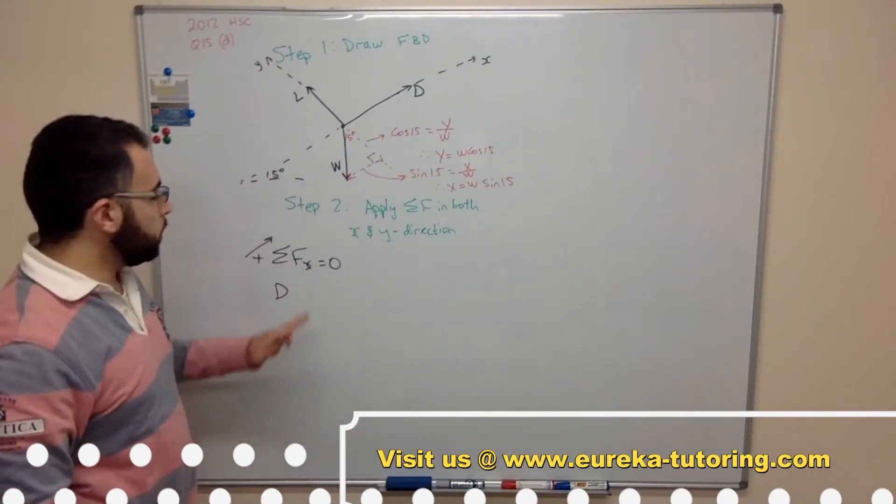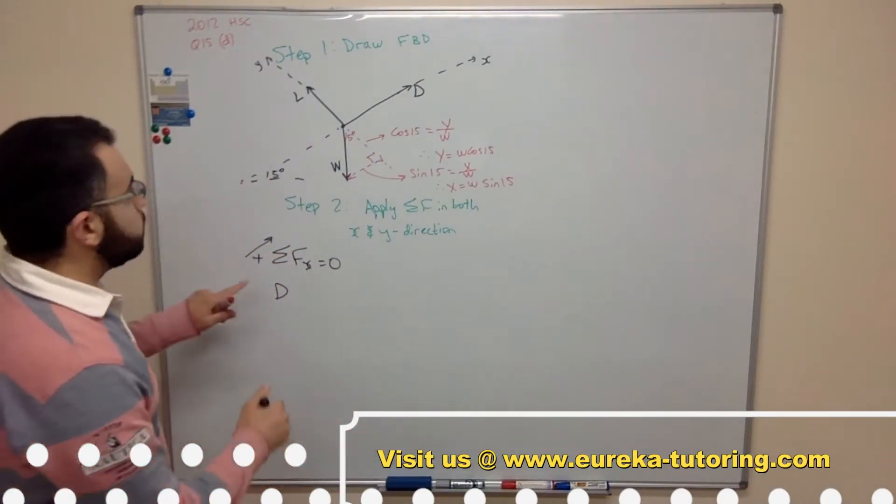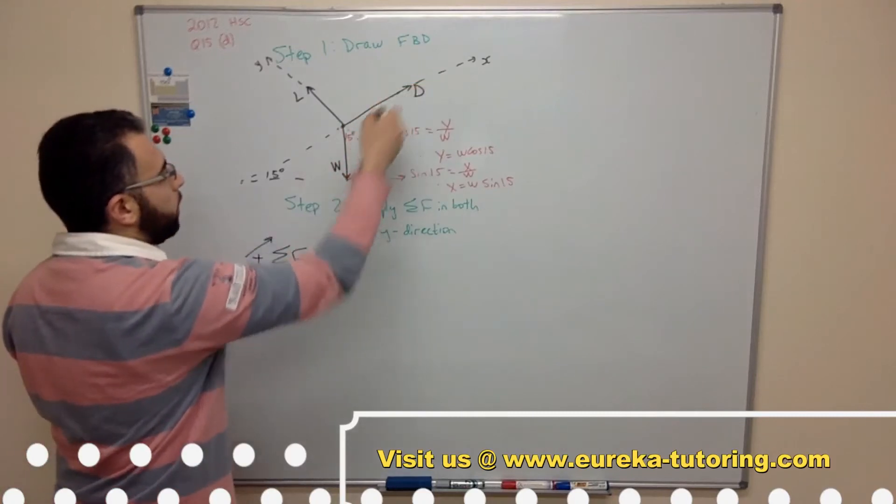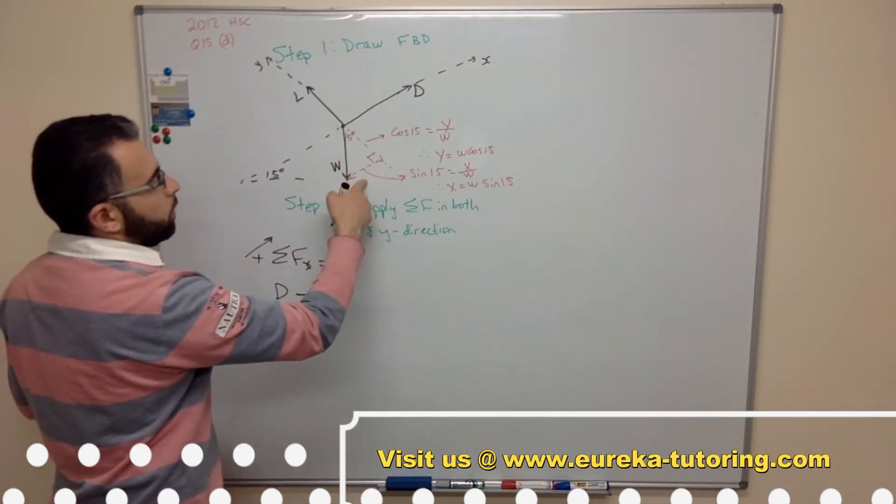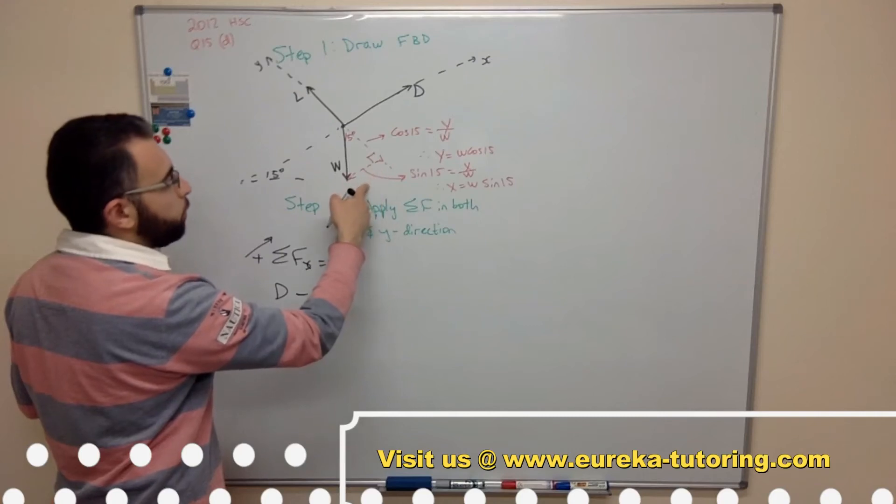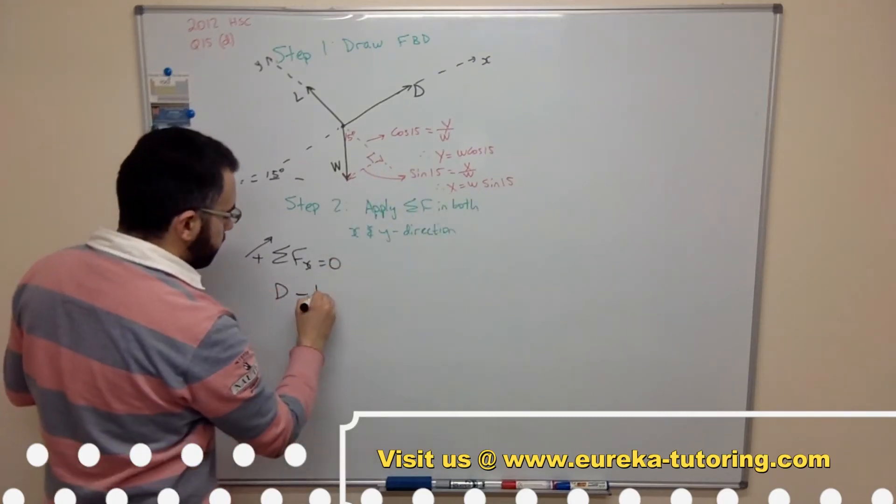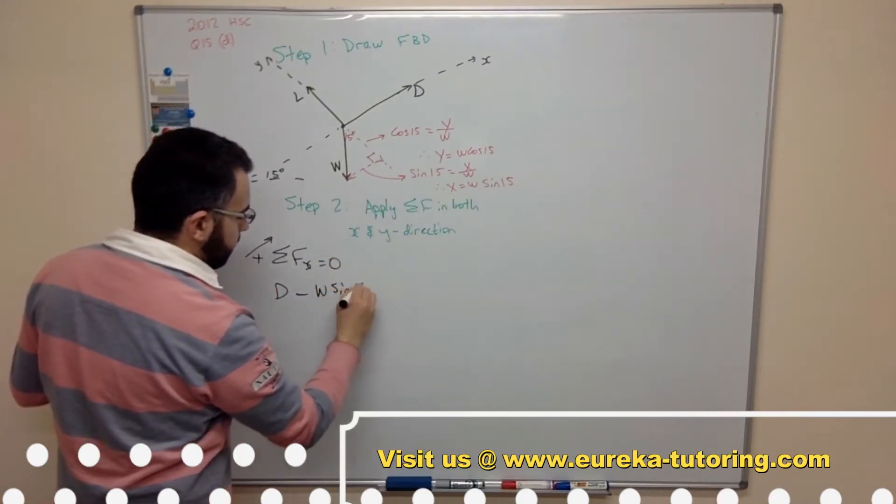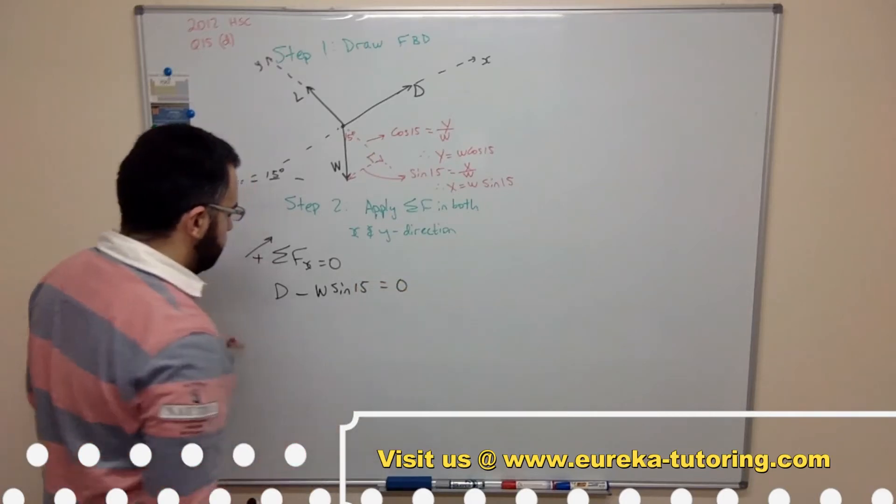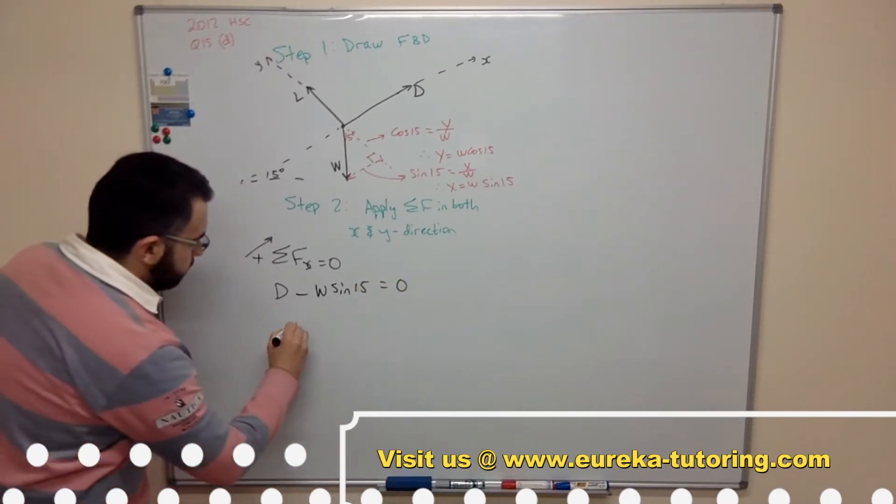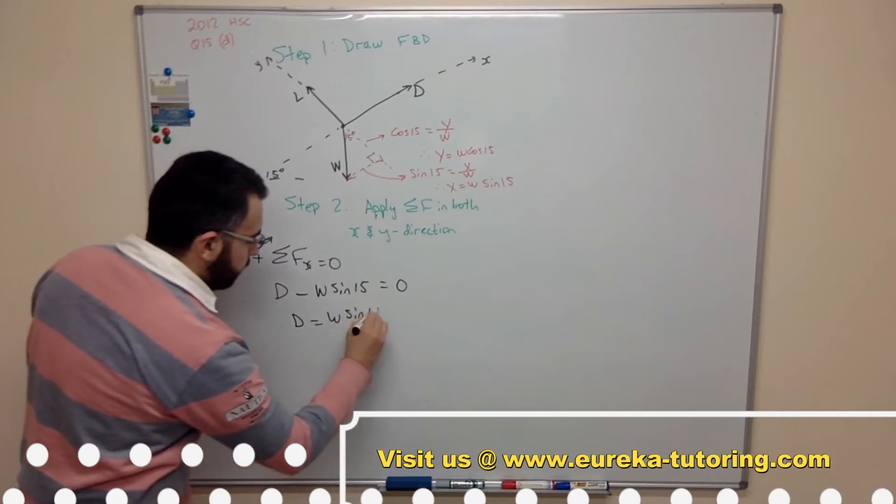Okay now that we've got our components we can continue with our calculations. So we've got drag force going that way minus the horizontal component the x component of the weight force which is w sine 15. And that equals zero. So I can rearrange this. Make d equals w sine 15.